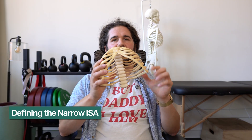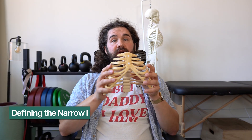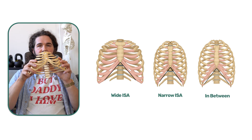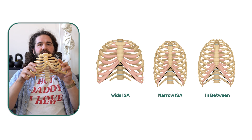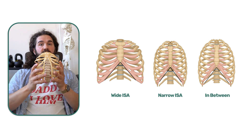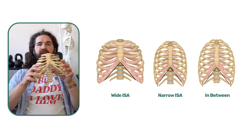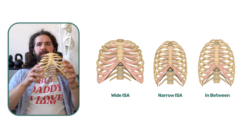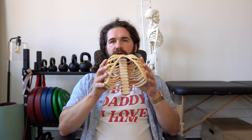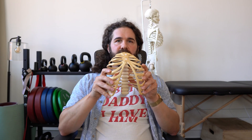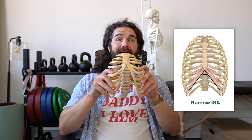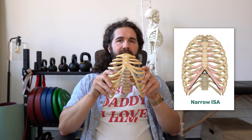Starting with the narrow ISA — that's just this angle here. We have people structurally biased towards a wide ISA, people biased towards a narrow ISA, and obviously in between. When we're talking about sway back posture, we're usually talking about someone that has a narrow ISA.